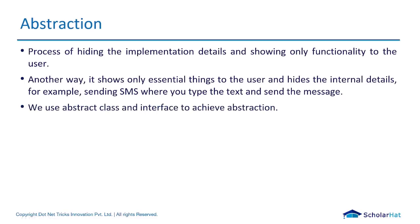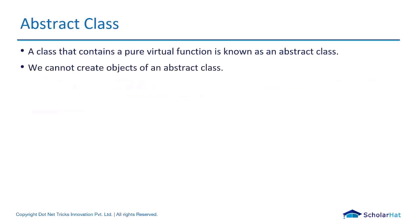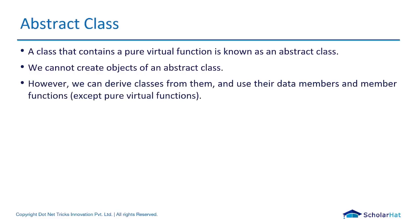The private access modifier is used to achieve abstraction. Now, a class that contains a pure virtual function is known as an abstract class. We already saw virtual functions. We cannot create an object for an abstract class. However, we can derive classes from them and use data members and member functions.